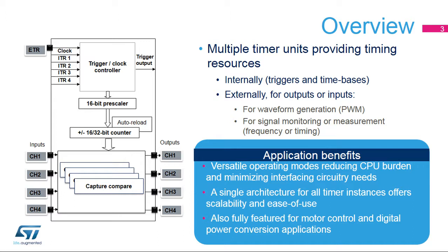All timers are based on the same architecture and are available in several derivatives. The timers mainly differ in the number of inputs and outputs they have, from a pure time base without any IOs to an advanced control version with 9 IOs. Most of the timers feature 16-bit counters, while some have 32-bit counters. Some features may not be present on the smallest timer derivatives, for example DMA, synchronization, and up-down counting modes.